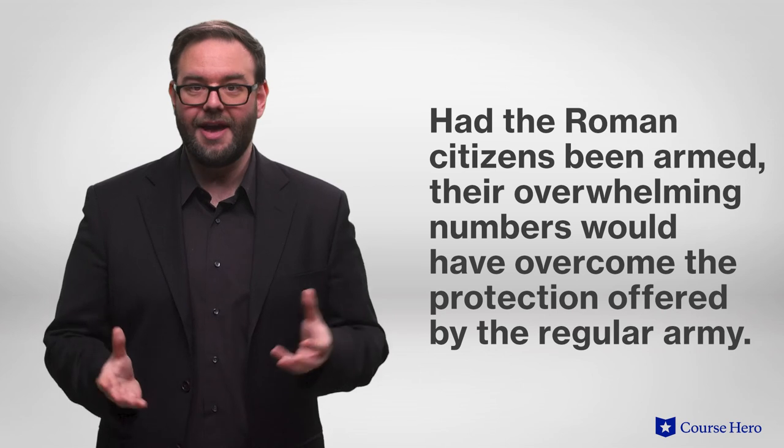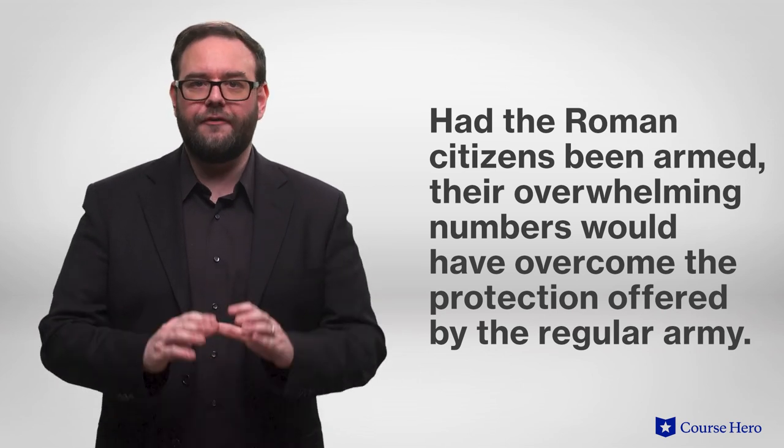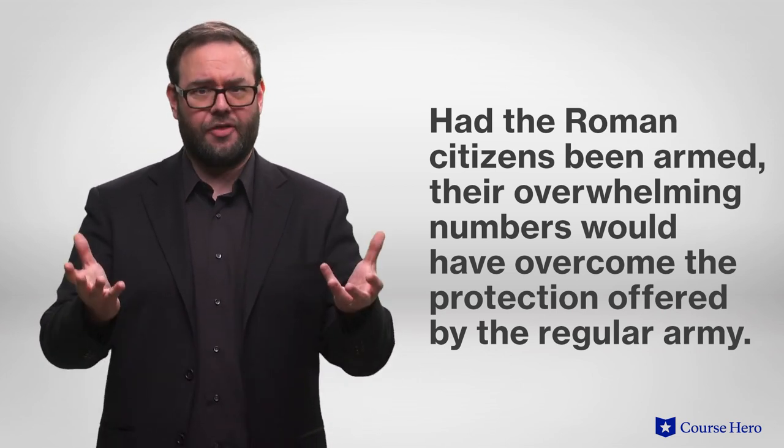Machiavelli notes that the existence of a standing army complicated the tasks of Roman emperors, making it possible to withstand the hate of the people. Machiavelli contends that had the Roman citizens been armed, their overwhelming numbers would have overcome the protection offered by the regular army.